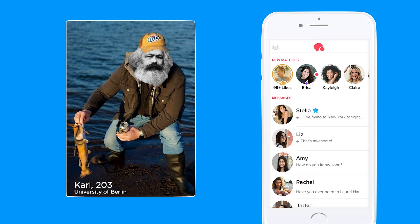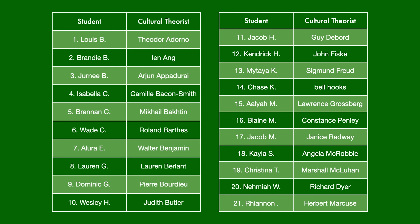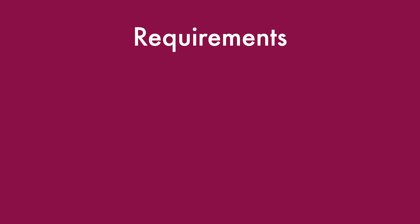This means you're going to have to be precise, thoughtful, economical, and clear in your language. I've listed everyone's name as they appear in the official roster with an initial for your last name. The entries are alphabetically listed and numbered. Find yourself in the left-hand column in either table and then look to the right of your name — whoever's name is listed to the right is the scholar you'll be researching. So if you're Wesley, you'll be studying Judith Butler, or if you're Kendrick, you'll be looking into John Fisk.